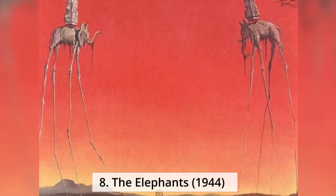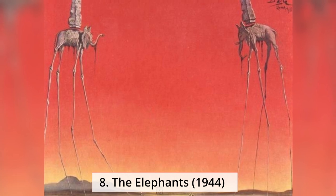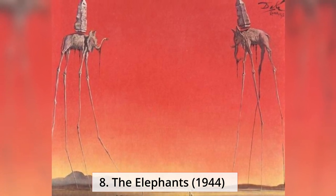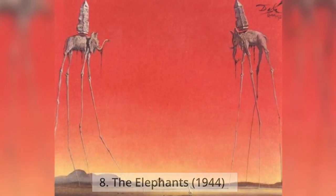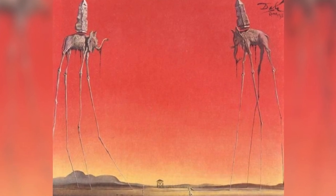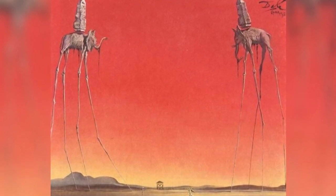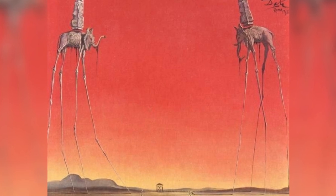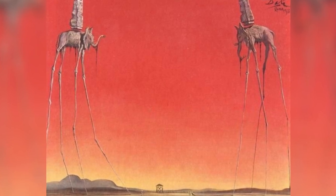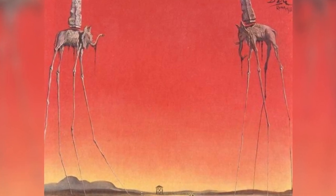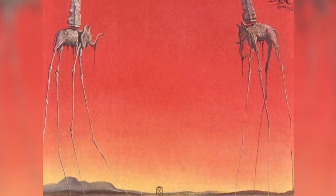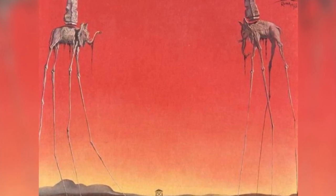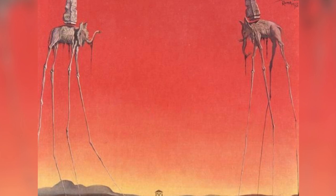8. The Elephants, 1944. The Elephants differs from the other paintings in that the animals are the primary focus of the work, with a barren graduated background and lack of other content, whereas most of Dali's paintings contain a great deal of detail and points of interest. The stork-legged elephant is one of Dali's most well-known works.